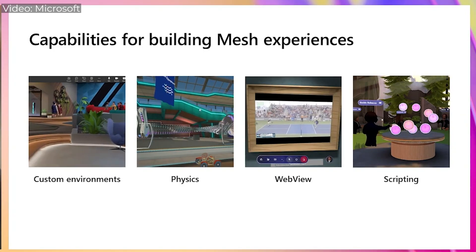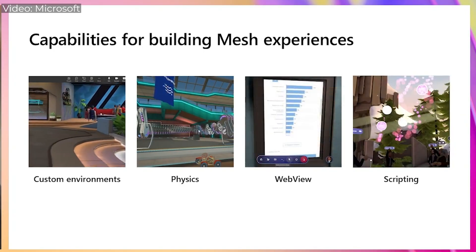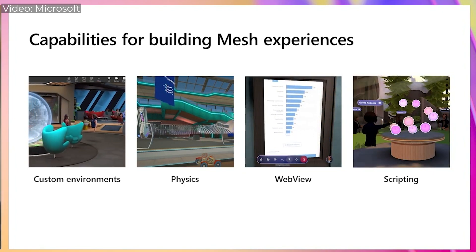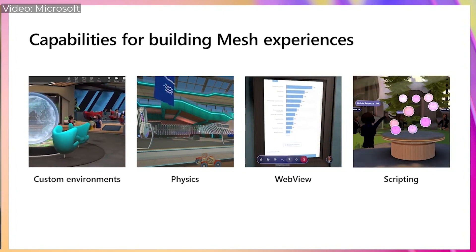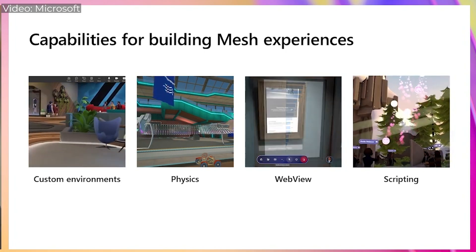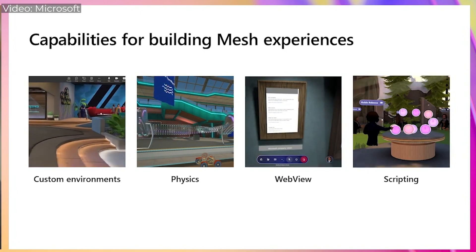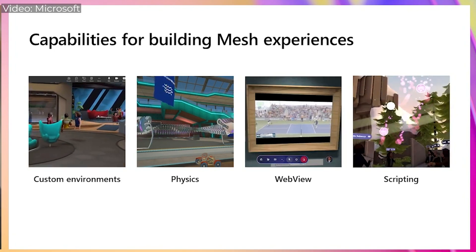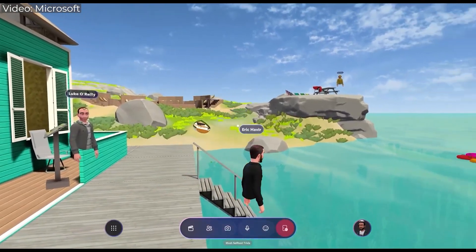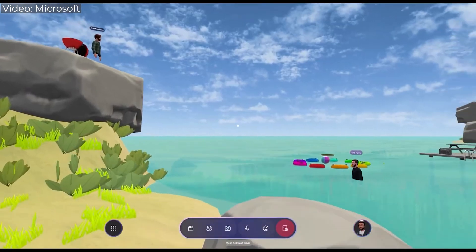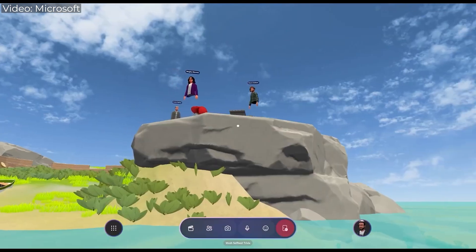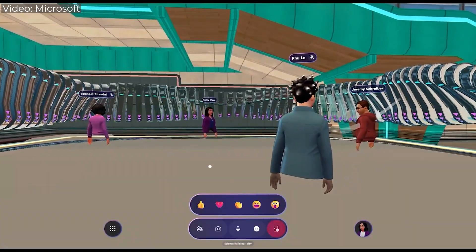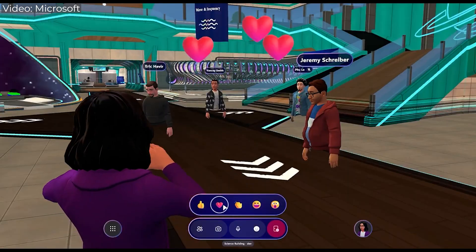You can also add a lot of interactive content like websites or videos inside your 3D world, which is quite cool. You can also integrate physics into the world, meaning that you can pick up a ball and throw it to your co-worker in VR. There are also some event management and hosting features, which means you can probably host your next company get-together or party inside of Mesh.